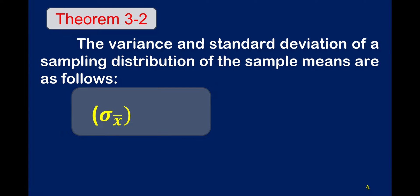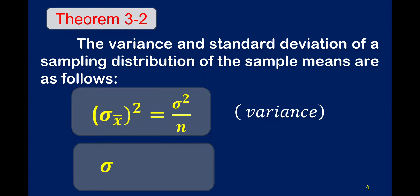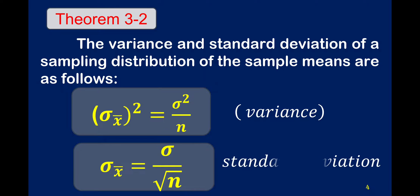For the variance of the sampling distribution of the sample mean, we have sigma sub x-bar squared is equal to sigma squared divided by n. And for the standard deviation of the sampling distribution of the sample means, sigma sub x-bar is equal to sigma divided by the square root of n.